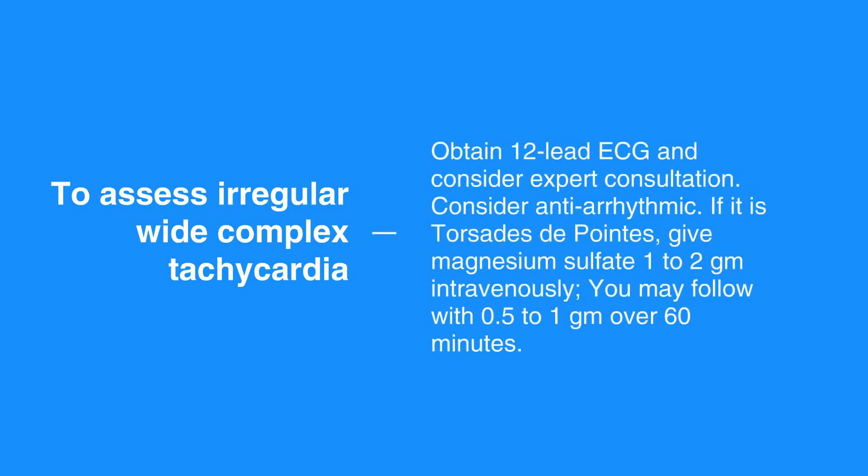To assess irregular wide complex tachycardia, obtain a 12-lead ECG and consider expert consultation. Consider antiarrhythmics. If it's torsade de pointes, give magnesium sulfate 1–2 grams intravenously. You may follow with 0.5–1 gram over 60 minutes.